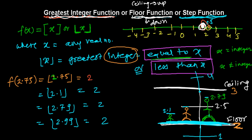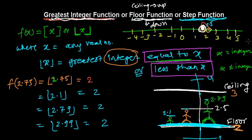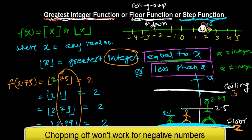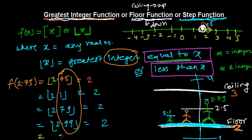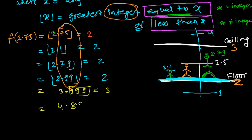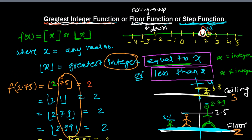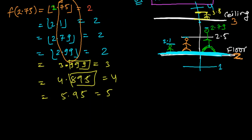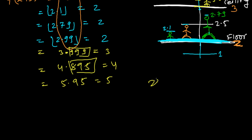Here's a simple rule: for any positive decimal number, just chop off the decimal part. So floor(2.75) = 2, floor(2.1) = 2, floor(2.79) = 2, floor(3.999) = 3, floor(4.895) = 4, floor(5.95) = 5. For any number x.PQZ, the floor function simply gives x.